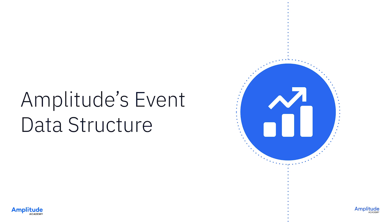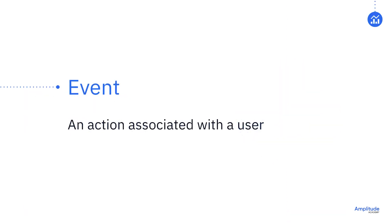In this video, we're going to look at Amplitude's event data structure at a high level. Our mission at Amplitude is to help companies build better products by providing product analytics to get a deeper understanding of how users behave and what they're doing in your product. Amplitude is event-based, which means the data we're analyzing consists of actions customers take in the product. Whenever an instrumented event fires in your product, that data is sent to the Amplitude platform in the form of events, event properties, and user properties.